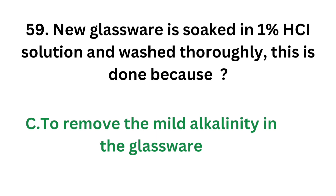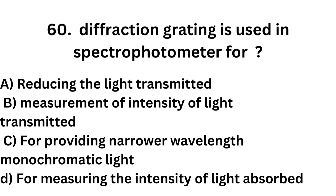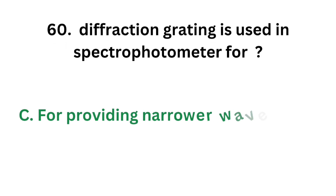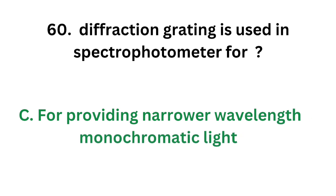Question number 60. Diffraction grating is used in spectrophotometer for: Option A - Reducing the light transmitter; Option B - Measurement of intensity of light transmitter; Option C - Providing narrower wavelength monochromatic light; Option D - Measuring the intensity of light absorbed. The correct answer is Option C. Diffraction grating is used in spectrophotometer for providing narrower wavelength monochromatic light.